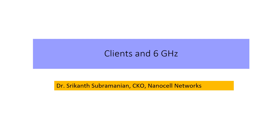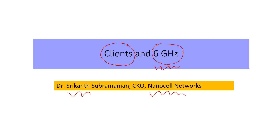We have heard a lot about APs in 6 GHz with AFC and other requirements. I just thought of highlighting a few points regarding clients and the various nuances in 6 GHz. My name is Srikant and I am with NanoCell Networks.